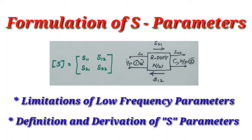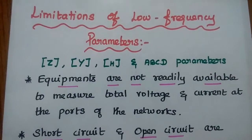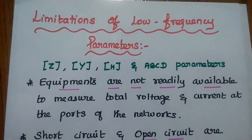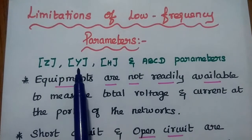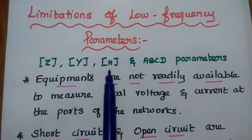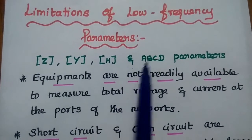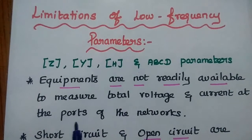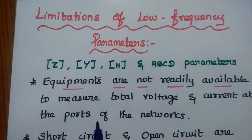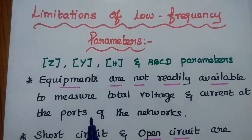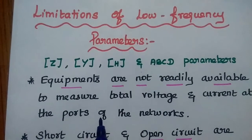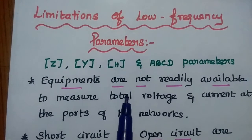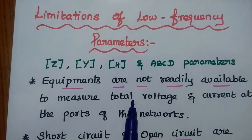We are going to discuss S-parameters and their derivation. Let's start with the limitations of low frequency parameters. Examples of low frequency parameters are impedance parameters (Z-parameters), admittance parameters (Y-parameters), hybrid or H-parameters, and ABCD parameters. In microwave networks, we use specialized components like waveguides. Low frequency components like resistors, capacitors, and inductors cannot be used at very high frequency ranges, so these low frequency parameters are not suitable to analyze microwave signals.